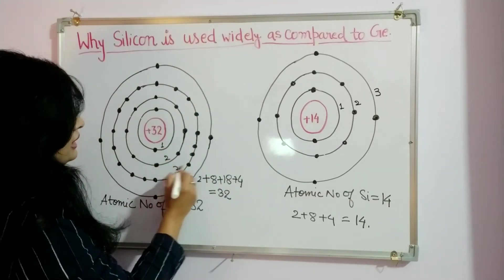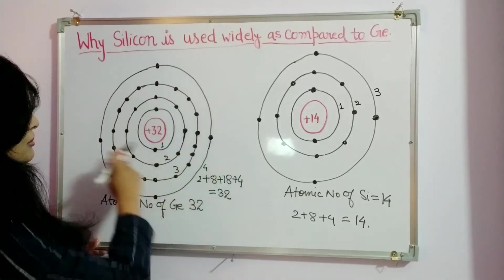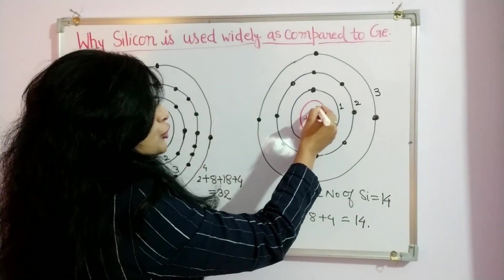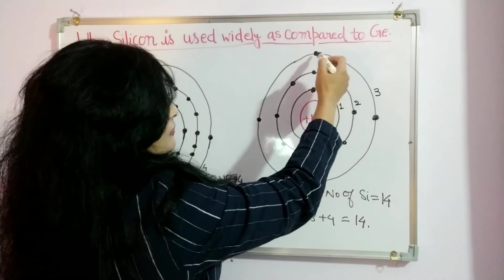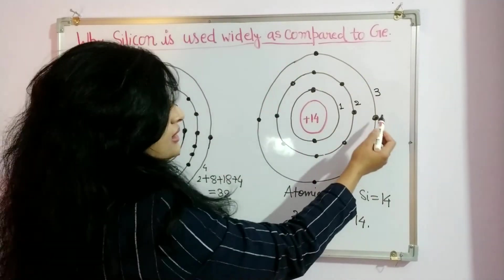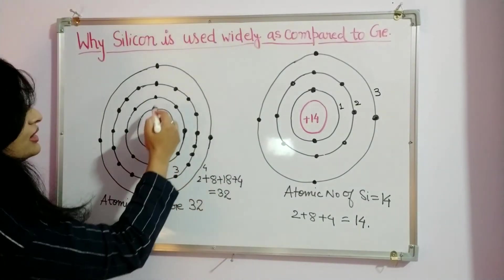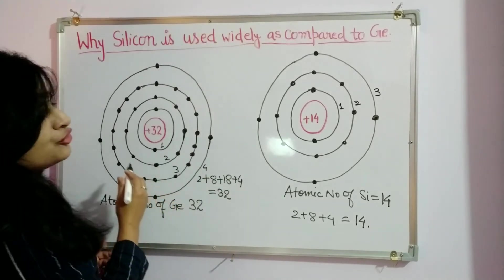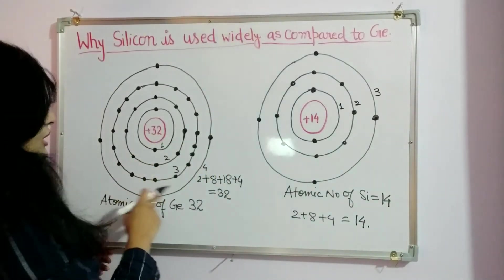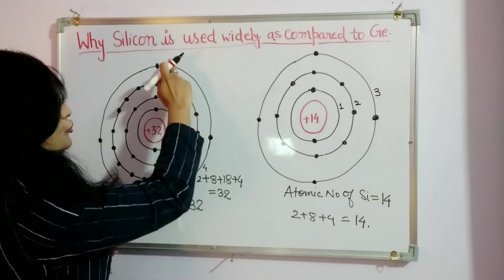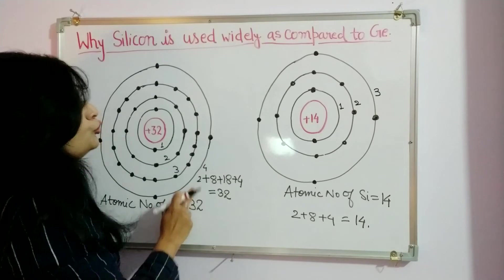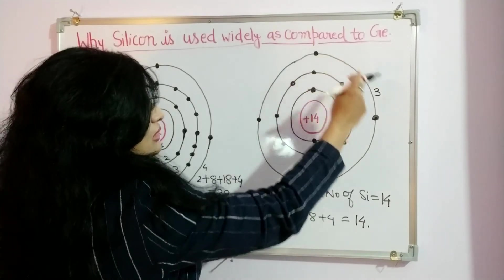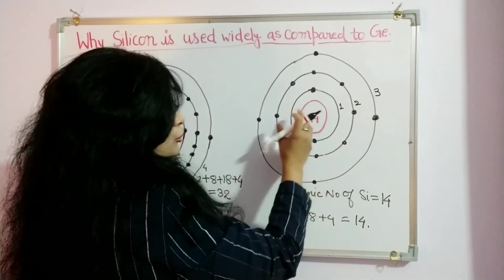While valence electrons in germanium are at the fourth shell: 1, 2, 3, and 4. So the force of attraction of nucleus on valence electrons is more in silicon as compared to germanium. Germanium electrons will take less energy to leave atoms.